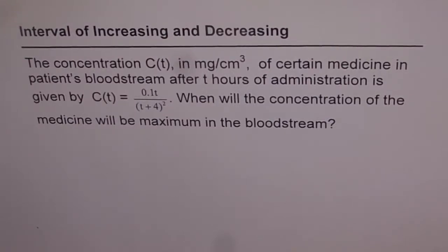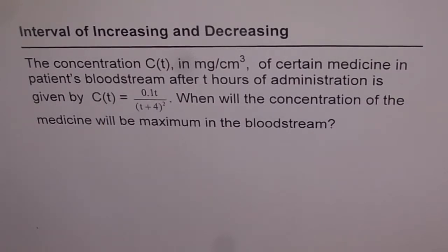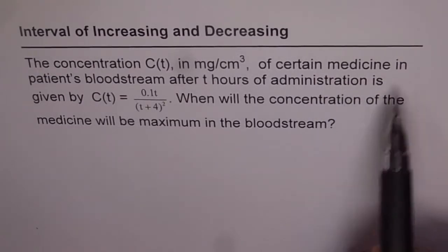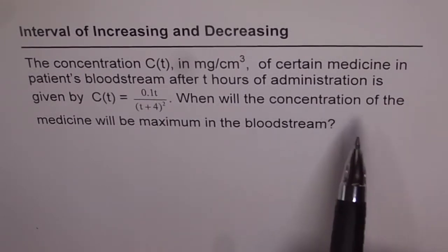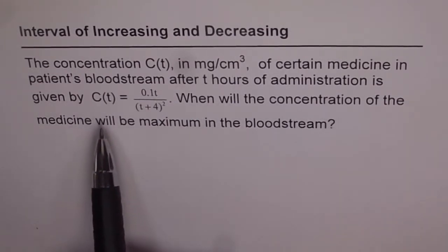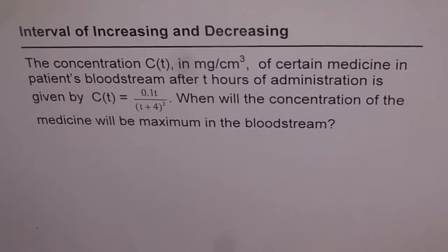Here is an application problem where we will use intervals of increasing and decreasing to get the maximum. The concentration C(t) in milligrams per centimeter cube of a certain medicine in a patient's bloodstream after T hours of administration is given by C(t) = 0.1T divided by (T + 4) squared. When will the concentration of the medicine be maximum in the bloodstream?